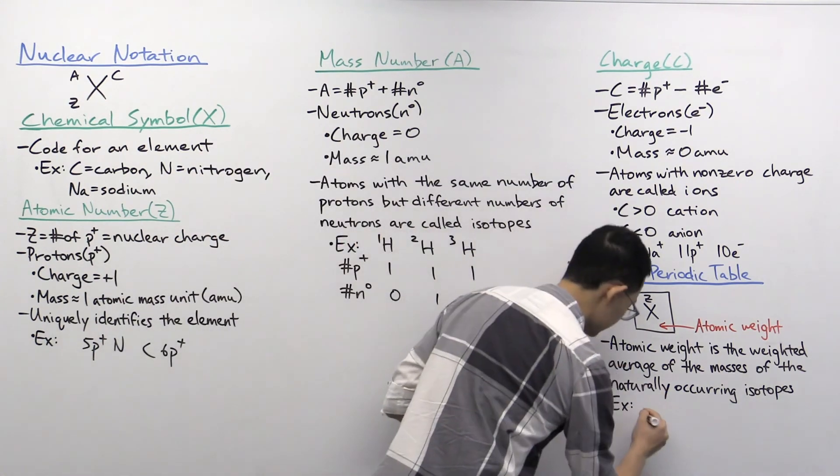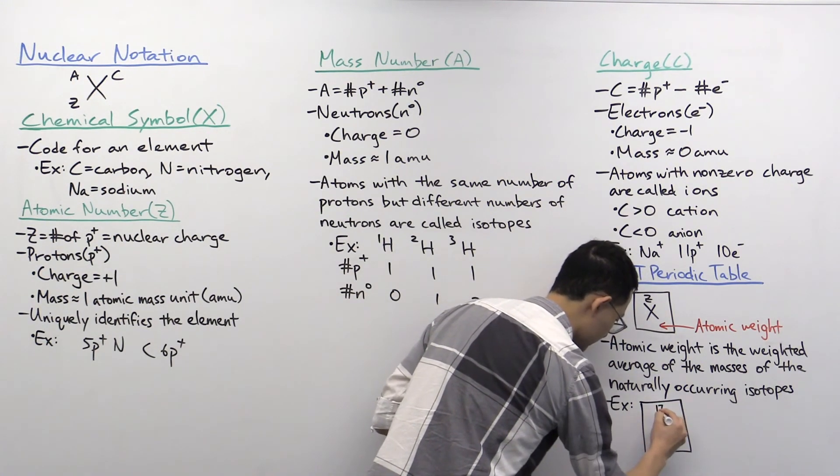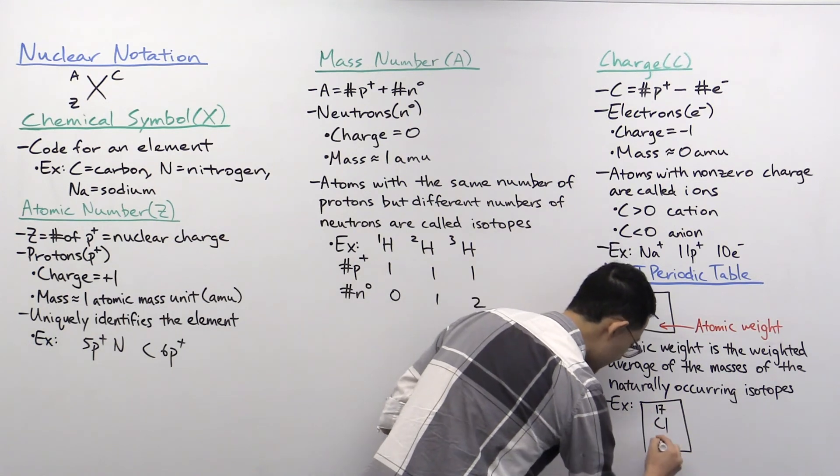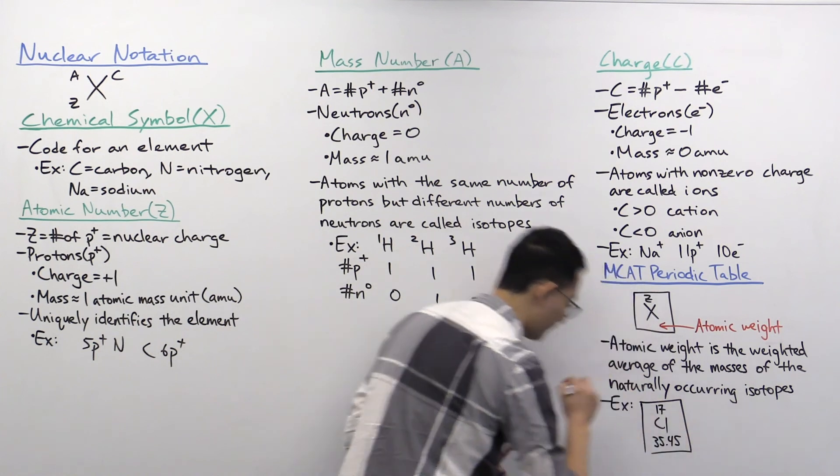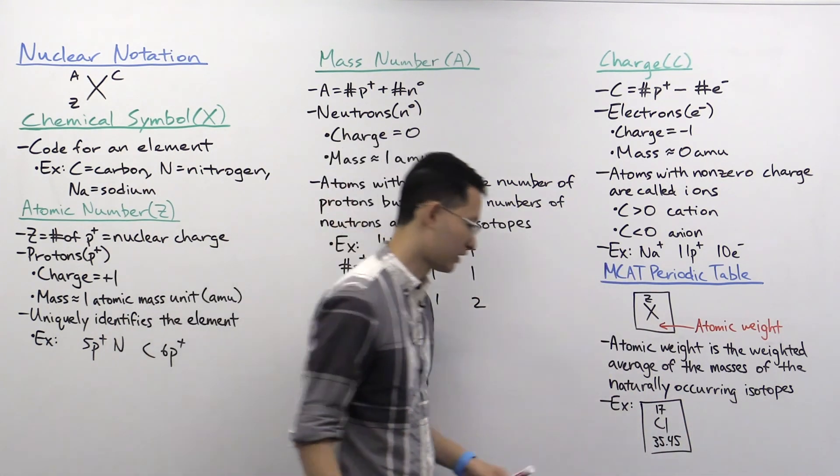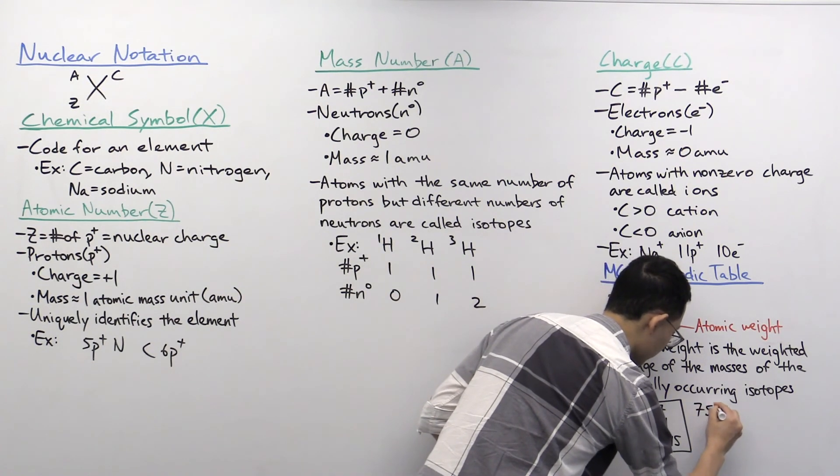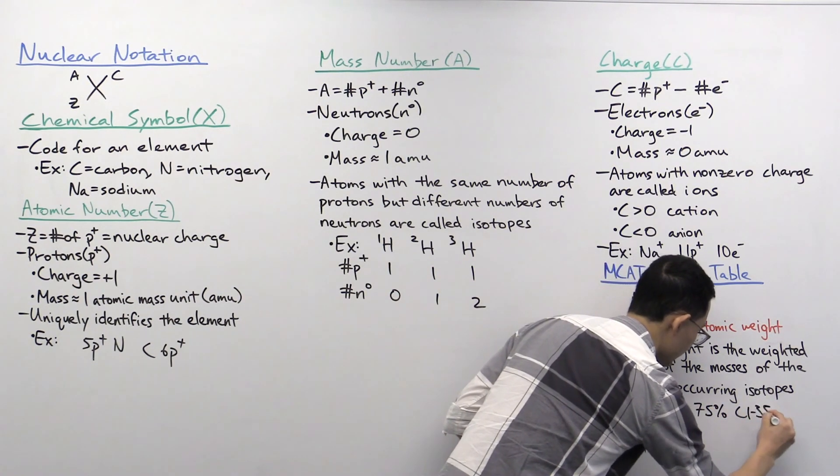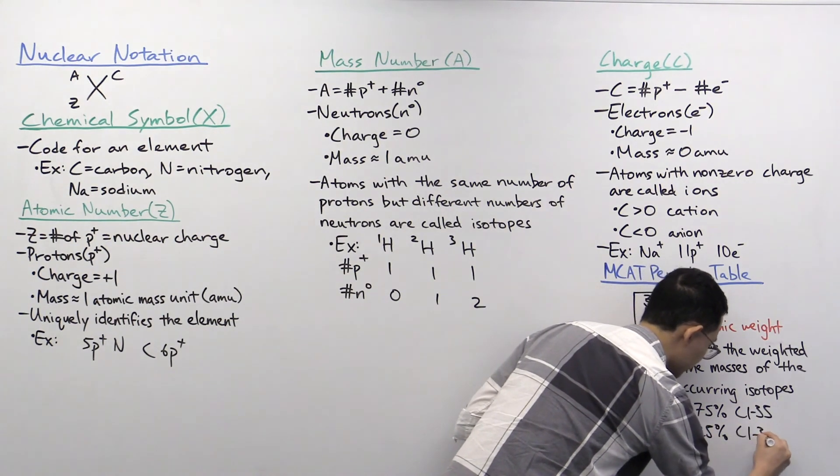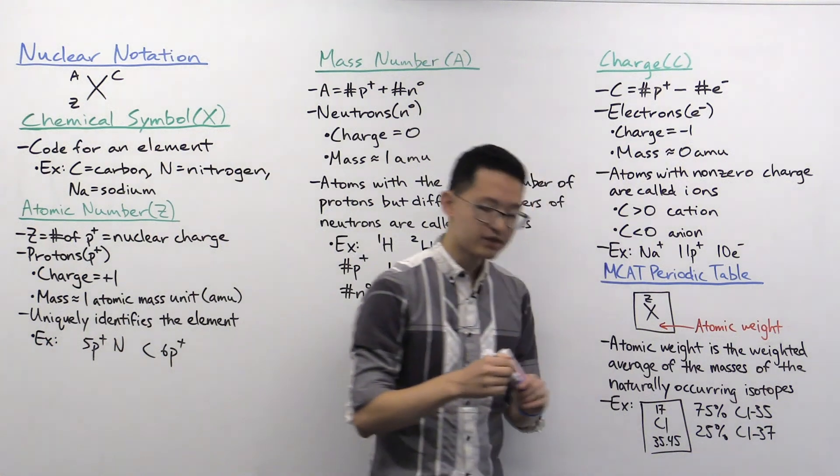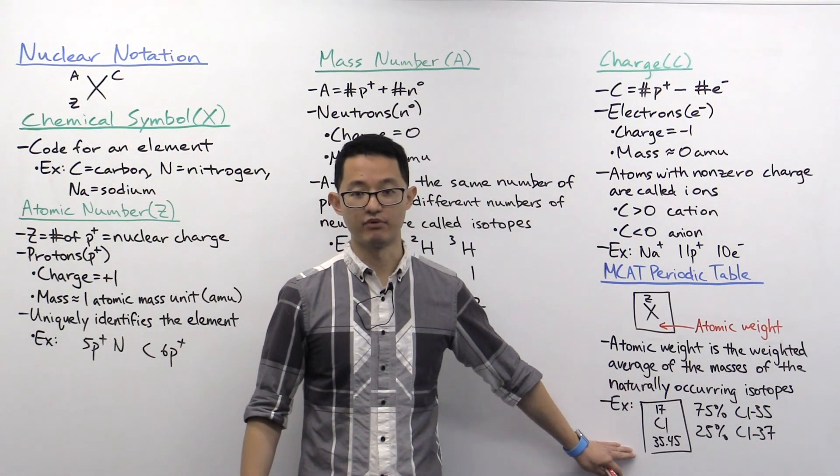So for example, we can consider an atom such as chlorine. So chlorine, you look in the periodic table, it's got an atomic number 17 and an atomic weight of about 35.45. And where this value comes from is because for chlorine, 75% of chlorine in the world is chlorine-35, but 25% of chlorine in the world is chlorine-37. And when you take the weighted average of those masses, you do get that value of approximately 35.5.